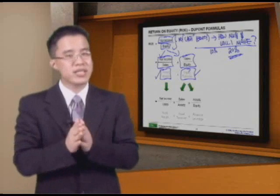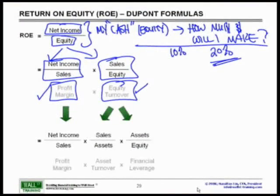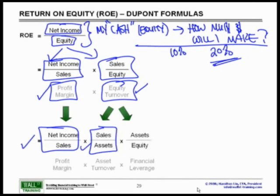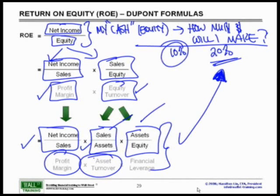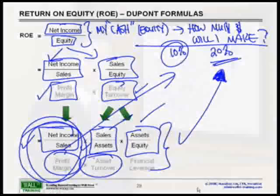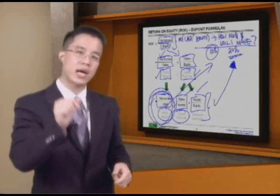Sometimes even the two-step breakdown isn't enough, so we use the three-step ROE ratio. This further distinguishes whether a higher or lower ROE is driven by profit margin, efficiency of asset utilization, or financial leverage. If both companies have the same profit margin and the same asset turnover, then a higher ROE must be explained by greater debt leading to a lower equity base. Conversely, if capital structure and asset efficiency are equal but one company has a lower ROE, the answer is simply a lower profit margin. The breakdown gives clarity on what's driving the return.